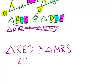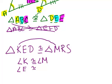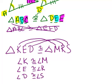You know that angle K has to be congruent to angle M because they match in the congruent statement. Similarly angle E is congruent to angle R and angle D is congruent to angle S because those also match in the congruent statement.